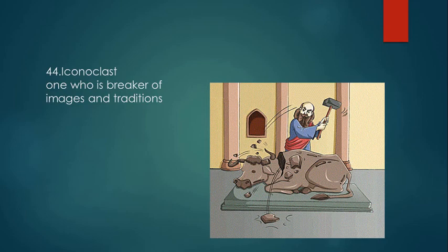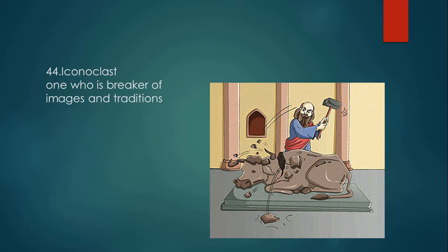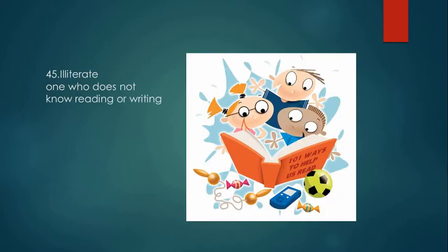Iconoclast is one who breaks images and traditions. Icon means image — like icons on your smartphone. Iconoclast means breaking images and traditions — a person who attacks and criticizes cherished beliefs or institutions. If you are part of a religion and criticize a long-standing tradition as being wrong, you are called an iconoclast.